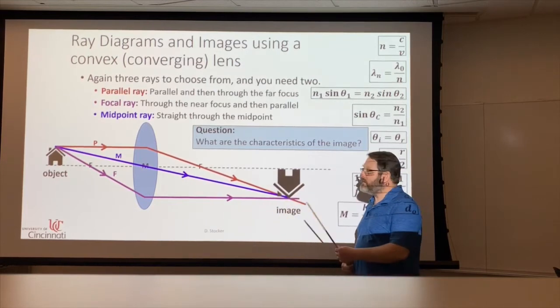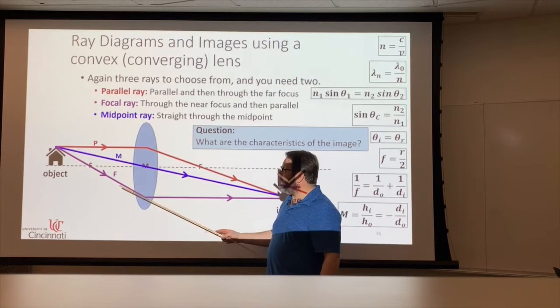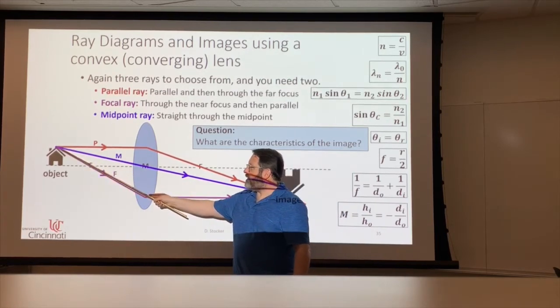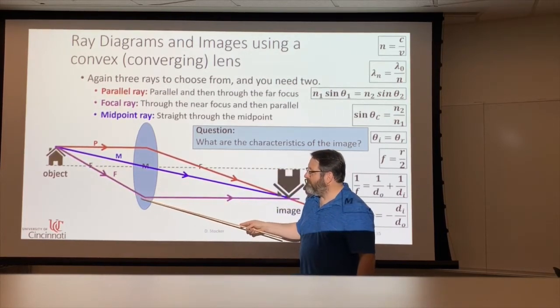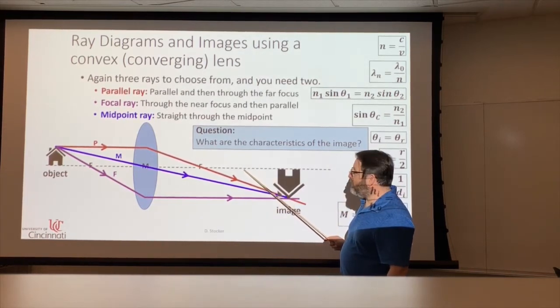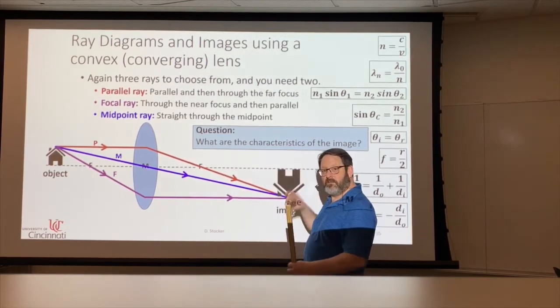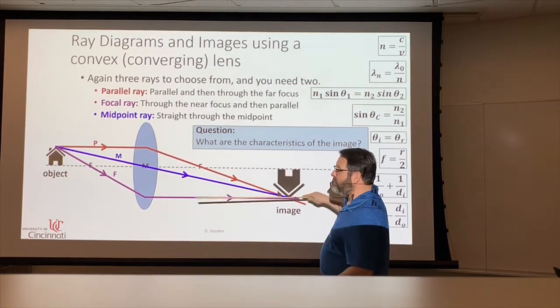Again, sometimes those aren't the easiest ones to draw. In some cases, there's a third line. So the focal ray on this side, if you pass through the focal point on this side, then it will come out going parallel to the principal axis. And that we saw when I reversed the lasers to come the other direction through the lens.